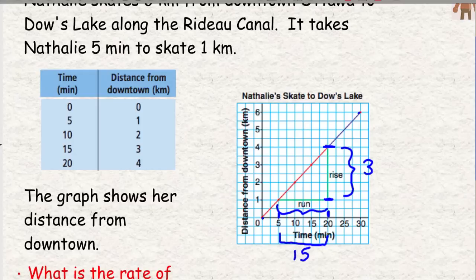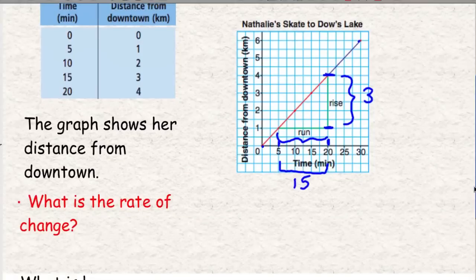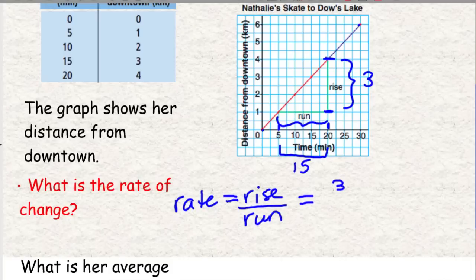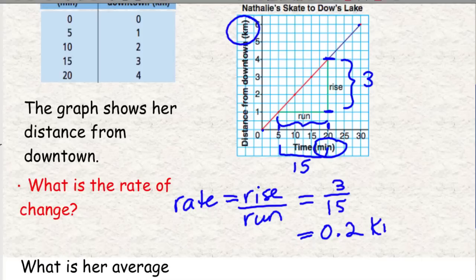So, right now, what we know is that Natalie's rate is 3 over 15. Rise over run. So, rate equals rise over run. And that's 3 over 15. If we take 3 and divide it by 15, we get 0.2. So, this graph, look at here. That's kilometers per minute. So, right now, we know that Natalie goes 0.2 kilometers per 1 minute. That's her speed. That's her rate.